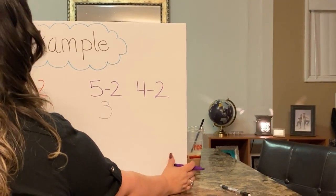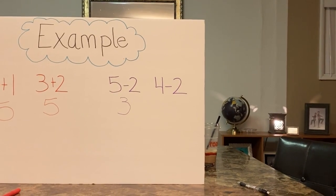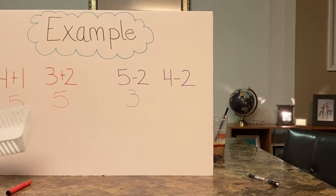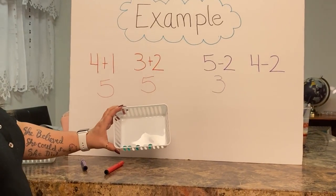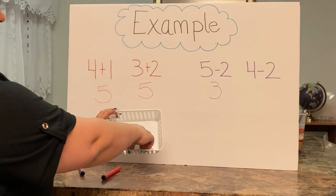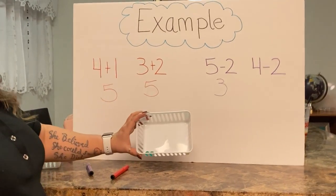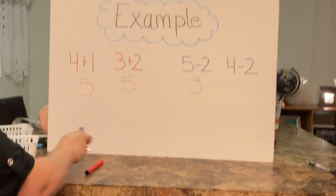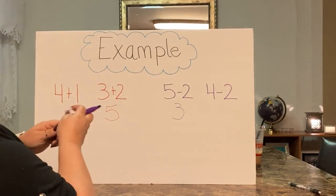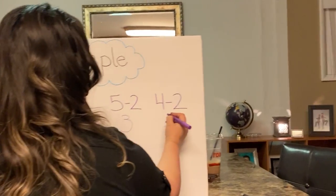And four minus two. You would start with four green marbles minus two or take away three. So take away would leave you with two green marbles. So four minus two is two.